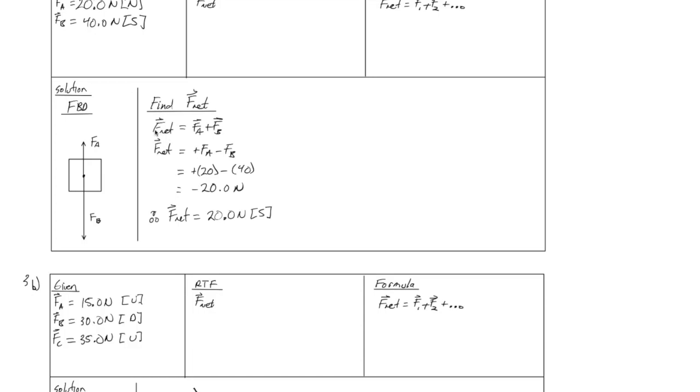So to solve for the net force, we have to use vector addition. So we know that Fnet is equal to FA plus FB. In this case, Fnet is equal to positive FA minus FB, positive because it is moving up, negative because it is pushing down. So if you notice, we are just substituting the magnitudes in because I've already actually put the directions in front. So it's just the magnitude of FA and the magnitude of FB. The result is negative 20 newtons or 20 newtons south as a vector.